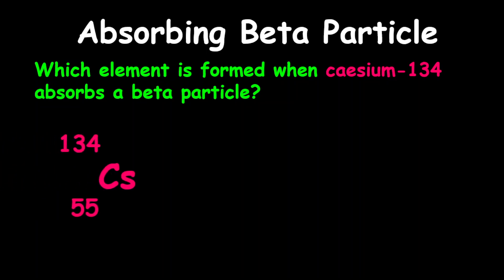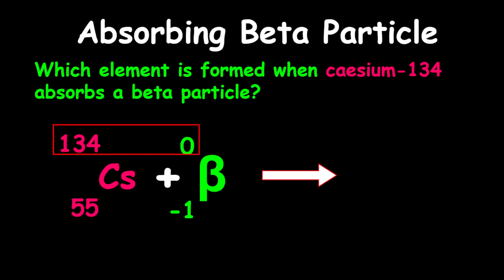Again, this is an absorption example. So therefore, we're going to represent our cesium with a proton number of 55. We're absorbing the beta particle, so we're going to add it to cesium. And now our product, we're going to determine that by adding the masses first. Again, 0 plus 134, there's no change in mass.